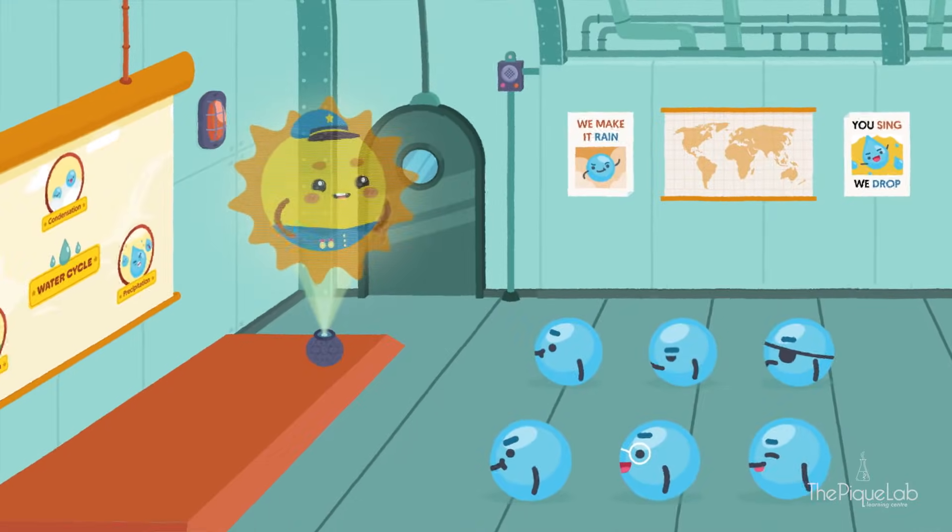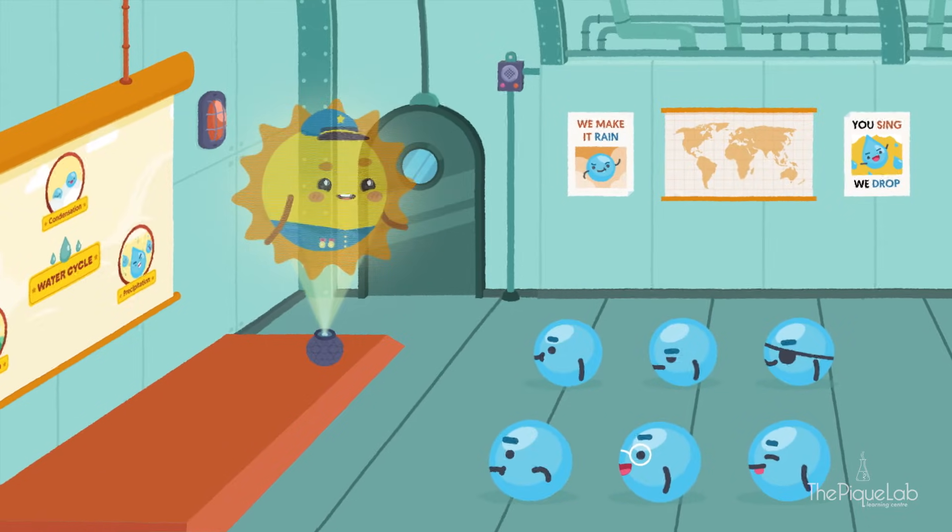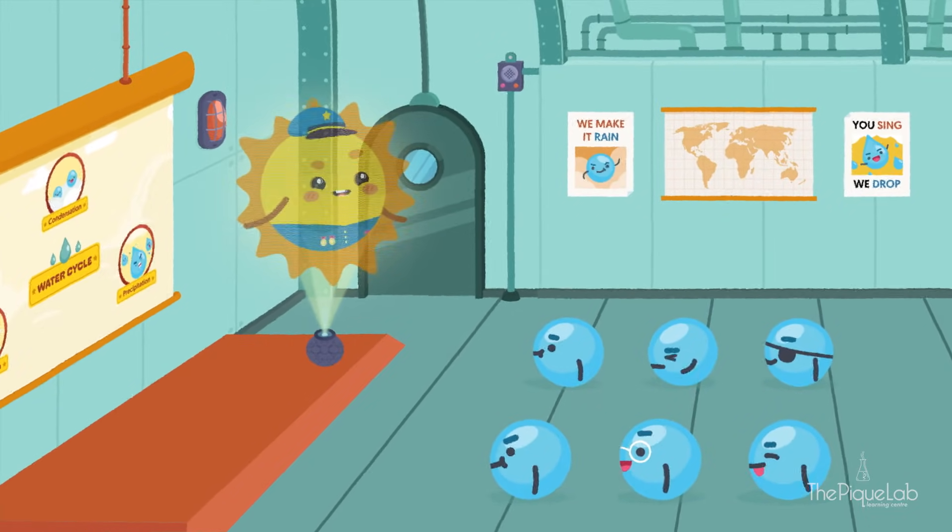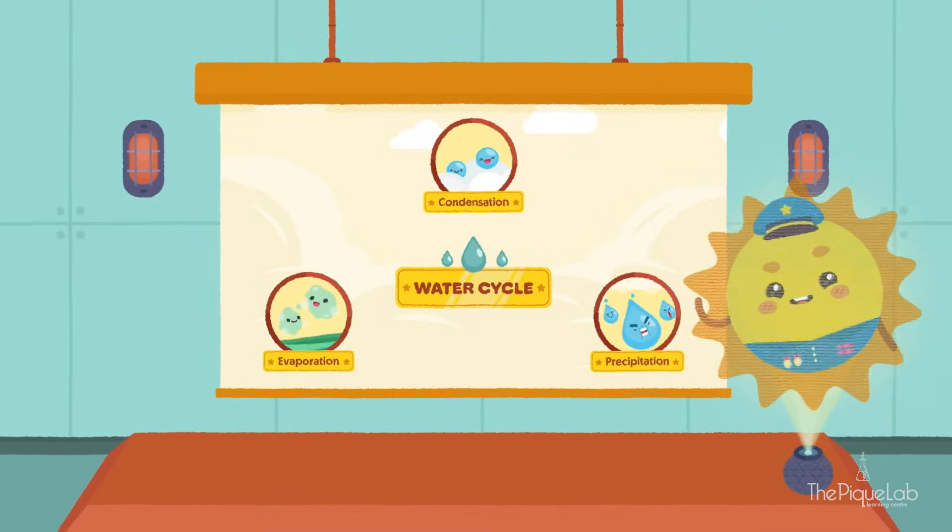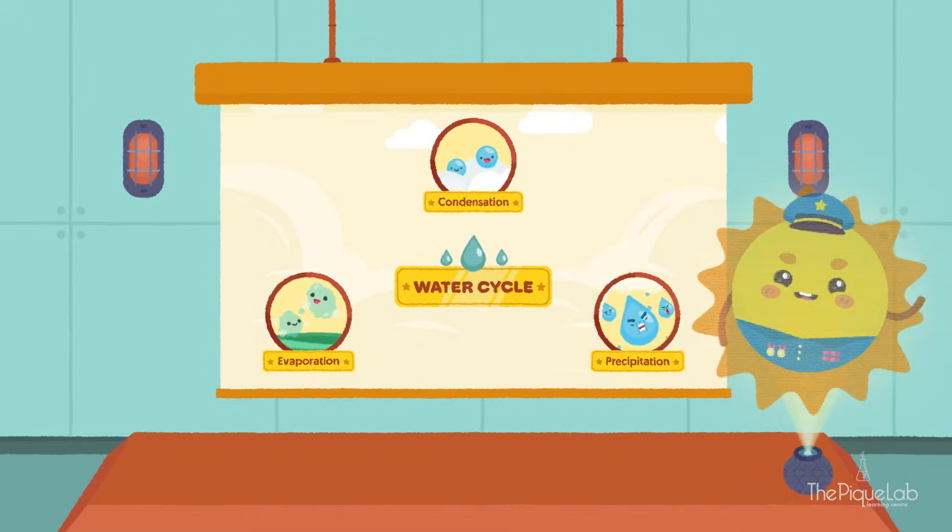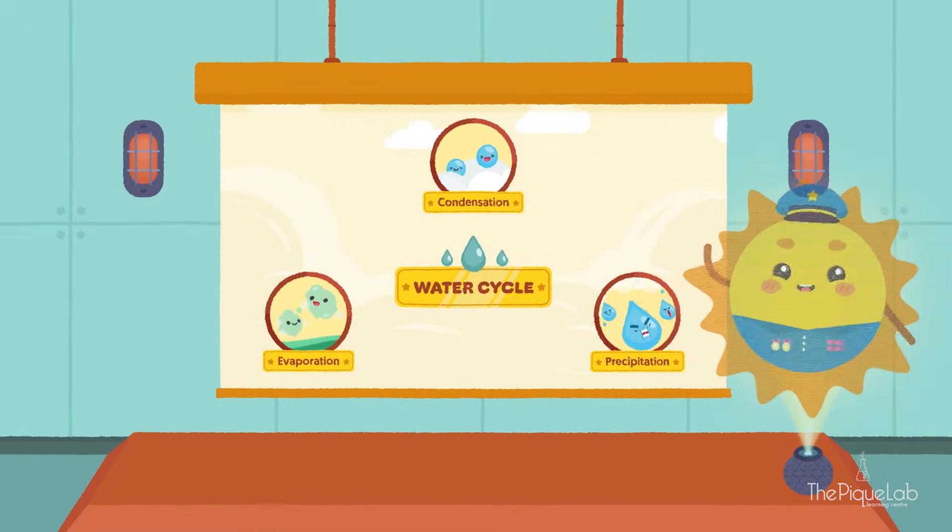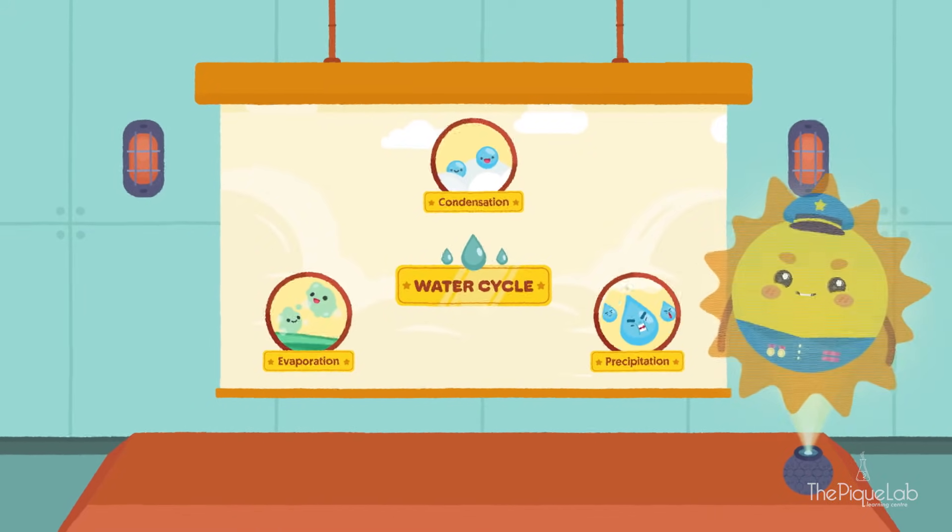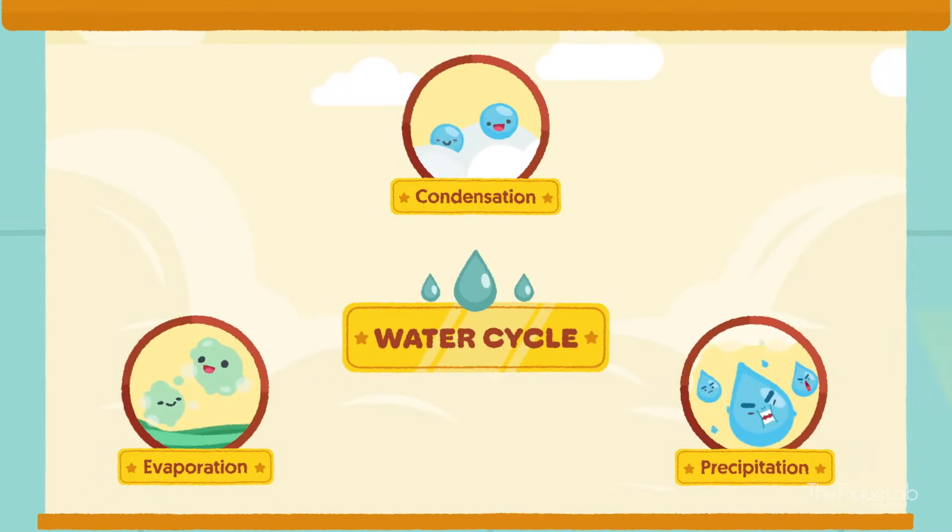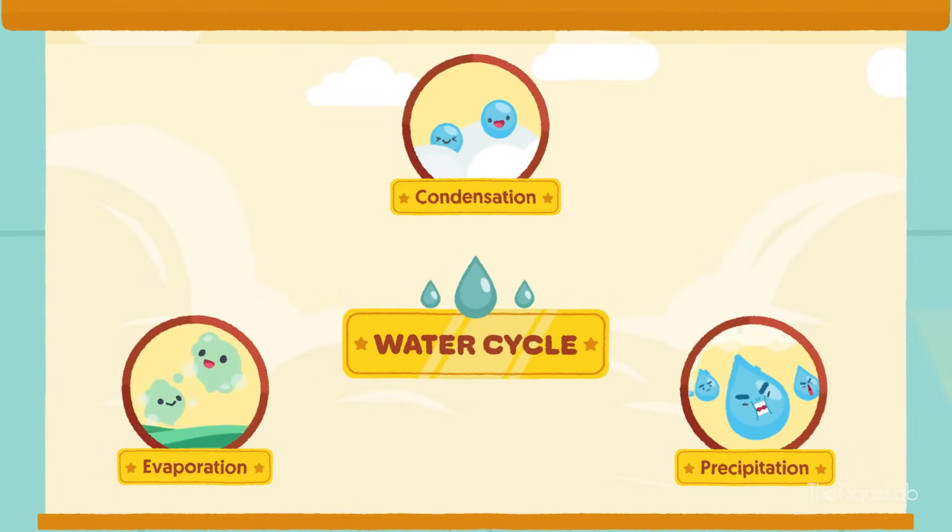Alright everyone, listen up. I will now be briefing you about your task in our mission codenamed Water Cycle. This mission, Water Cycle, is imperative to provide a continuous supply of fresh water for all living organisms to survive, ensuring the continuity of their kind. Now, let's go through each phase of this mission.